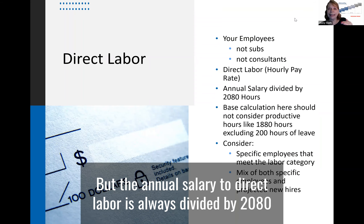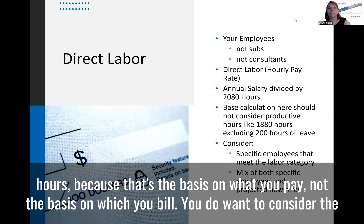The annual salary to direct labor is always divided by 2,080 hours because that's the basis on what you pay, not the basis on what you bill.